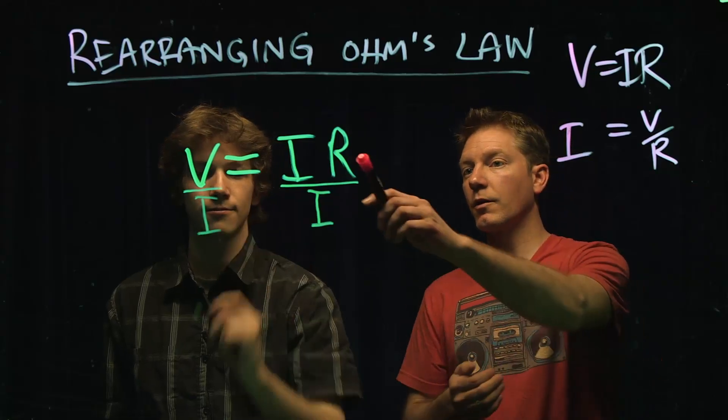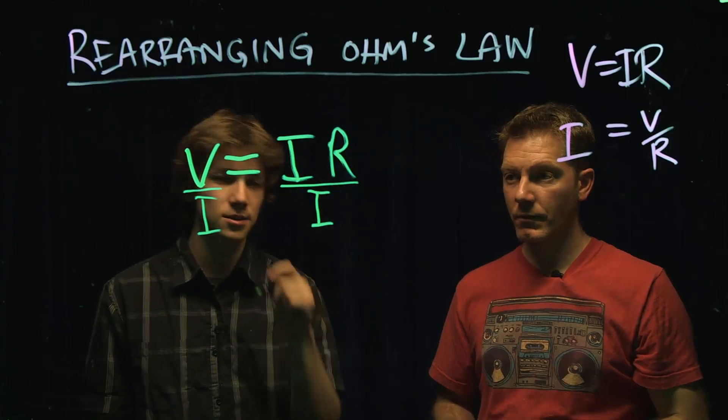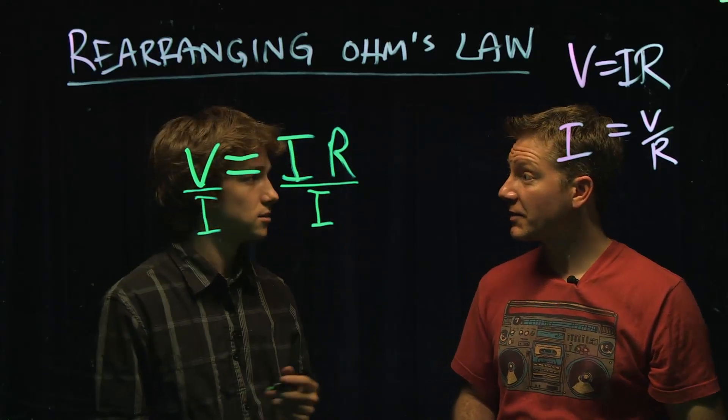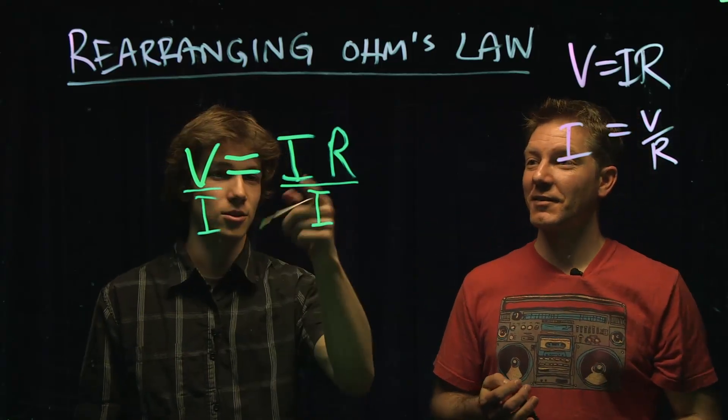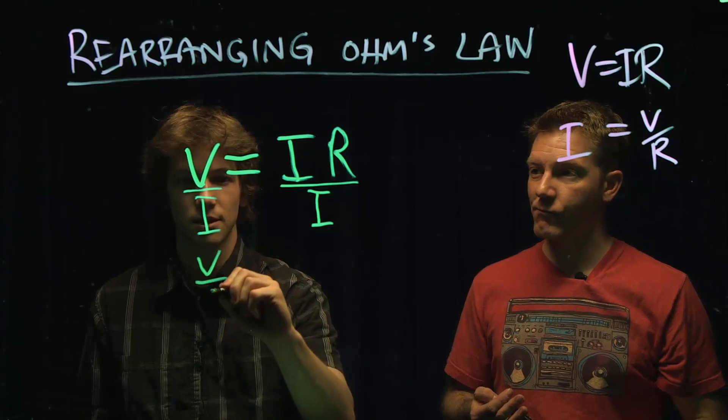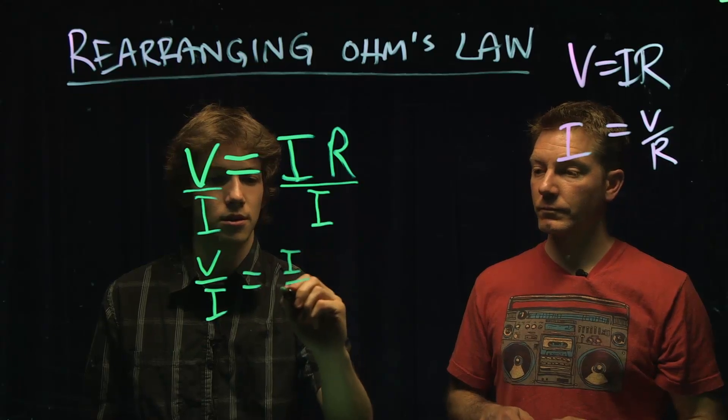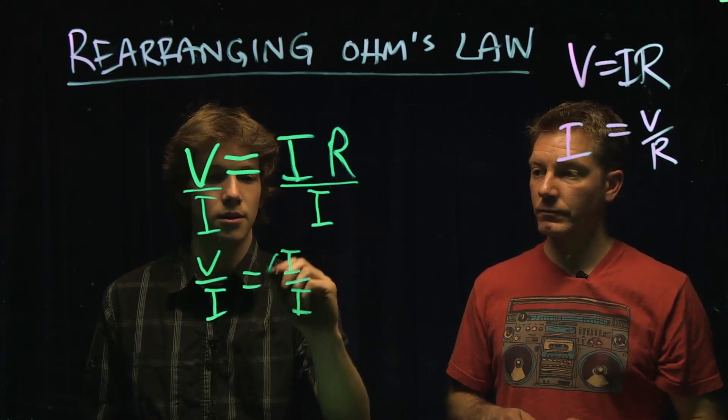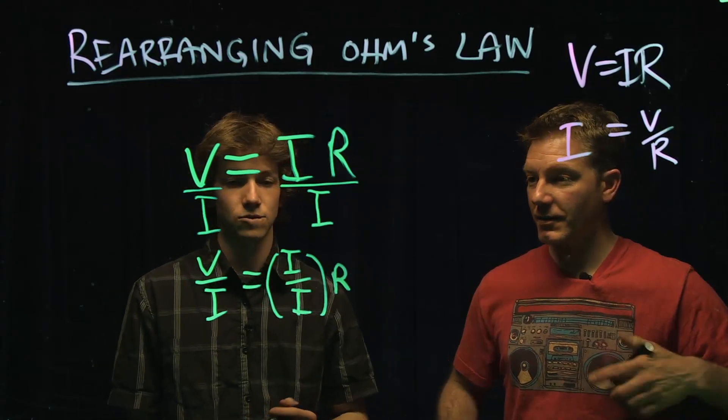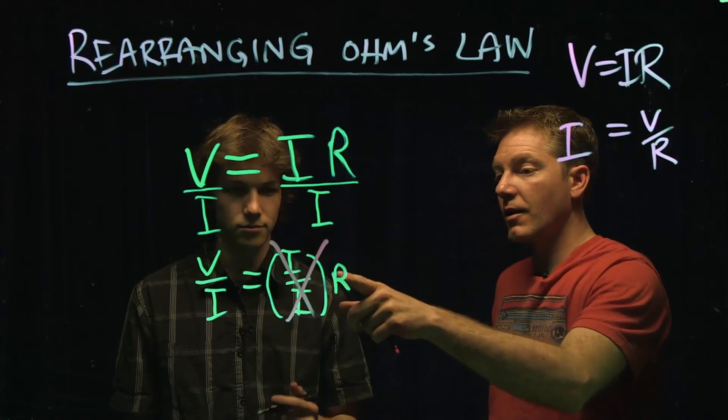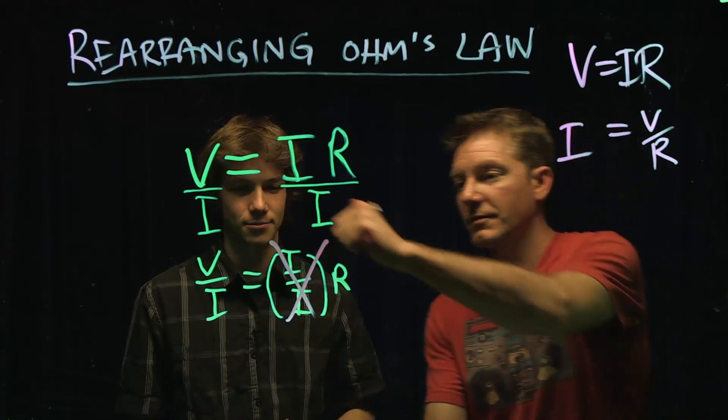Because you want R by itself so you're going to tell the current, get out of there. I basically want to cancel out these two I's. Because anything divided by itself is? One. You got it. So if we sort of rearrange this here, it's better to find what's going on. We've got I divided by I times R. Very cool. I divided by I because that's one and that's R. So one times R is? R. Perfect.